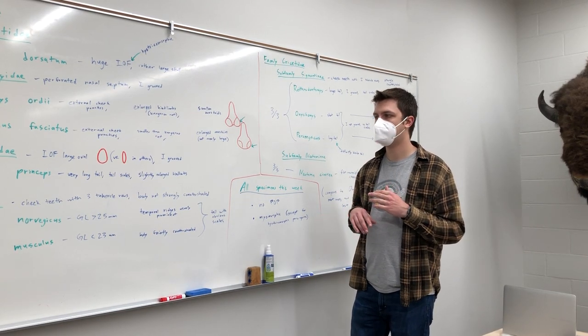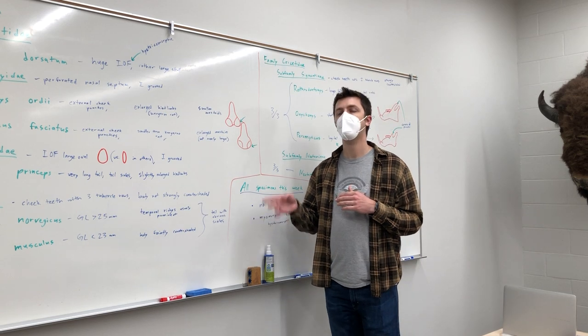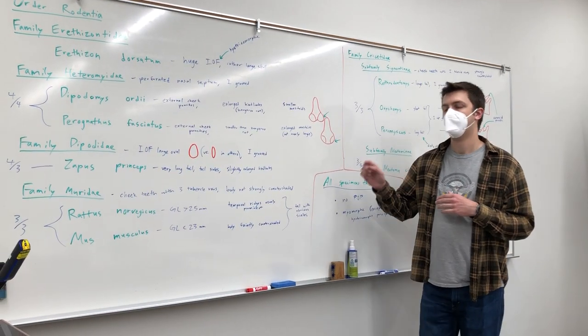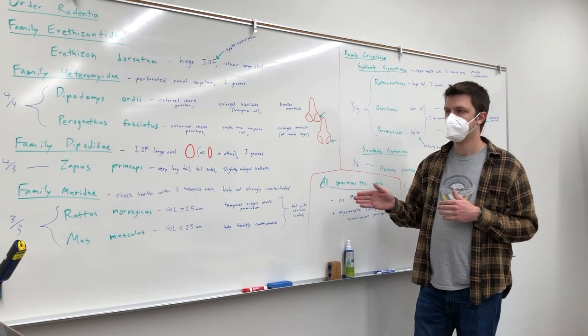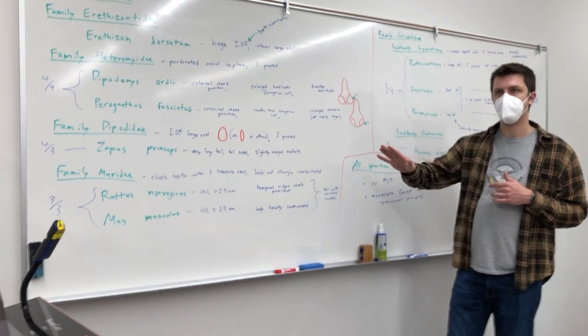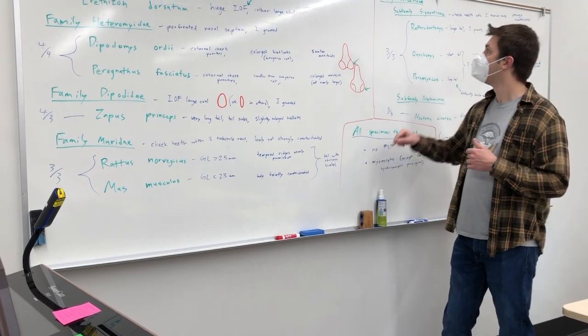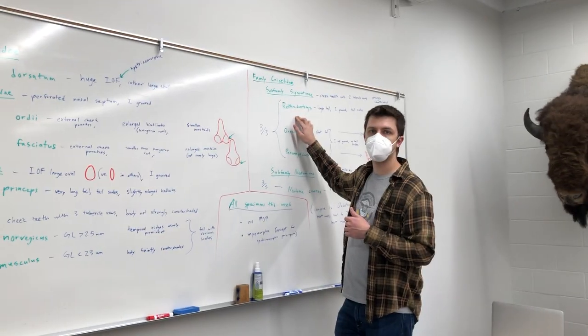In this video, I'll be going over how to identify family Muridae and family Cricetidae. Family Muridae are the Old World Mice and Rats, meaning from Asia, Africa, Europe. Cricetidae, the New World Mice and Rats, meaning from North and South America.